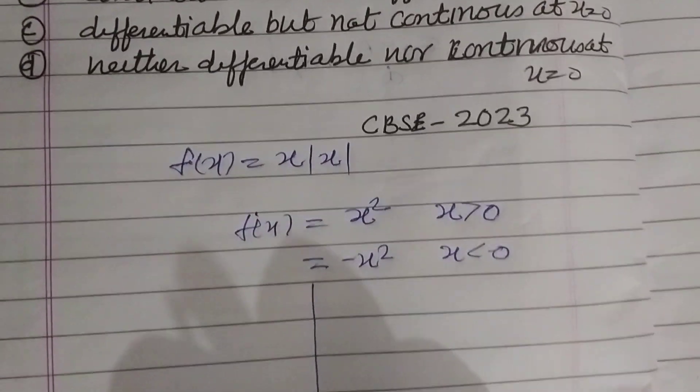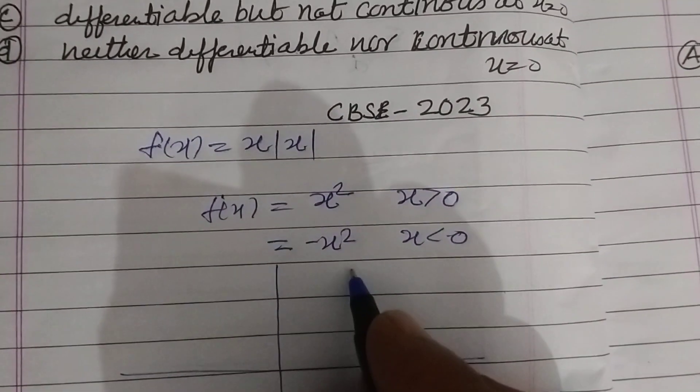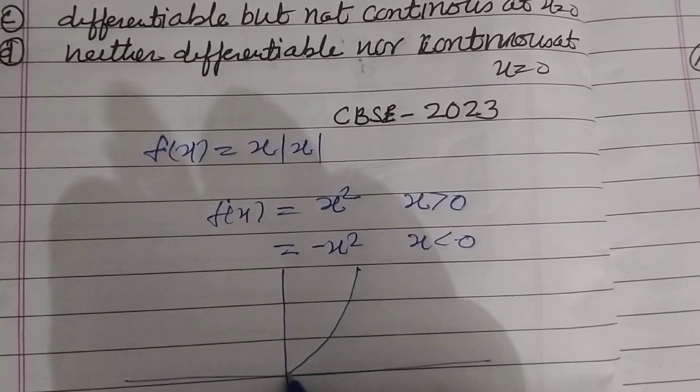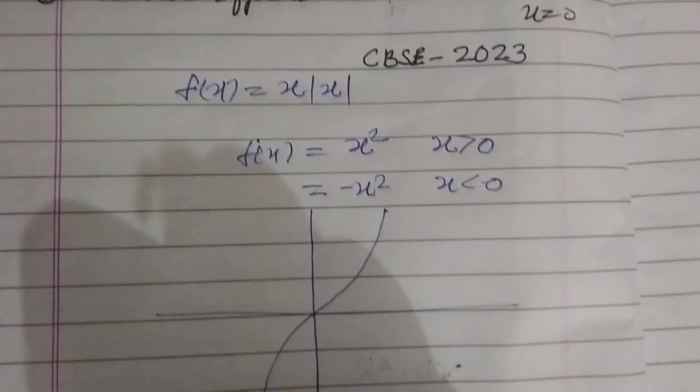So the graph of the function is this is x square and this is minus x square which is a continuous function.